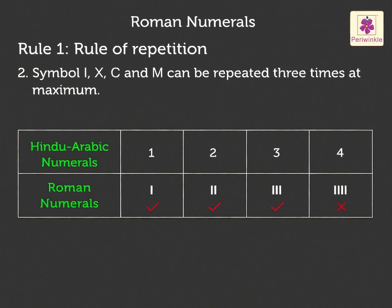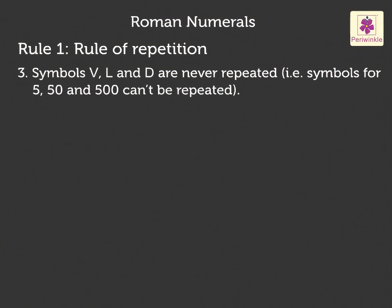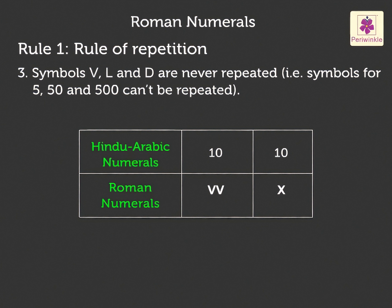But we cannot write 4 as IIII. The symbols V, L and D are never repeated. That is, symbols for 5, 50 and 500 cannot be repeated. This means that we do not write the number 10 by repeating V but as X.